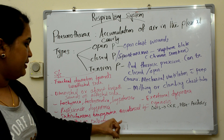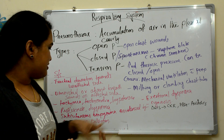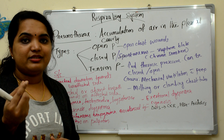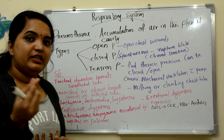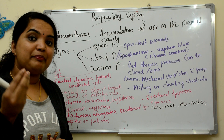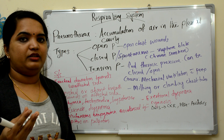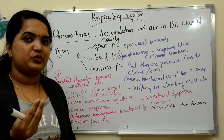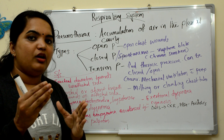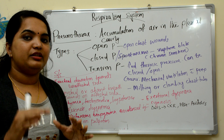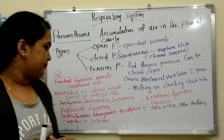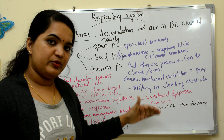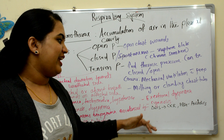Subcutaneous emphysema is evidenced by crepitus on palpation — air entering into the subcutaneous tissues in nearby areas, which you can detect by palpation. Exertional dyspnea and cyanosis will also be present with pneumothorax.